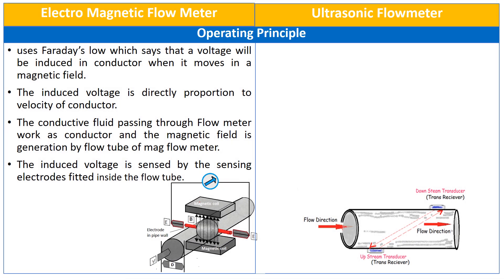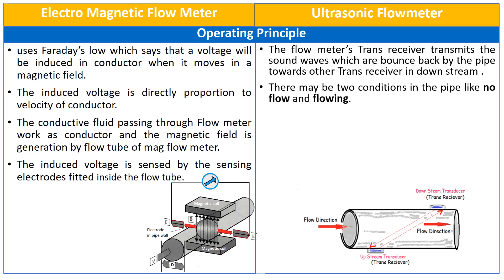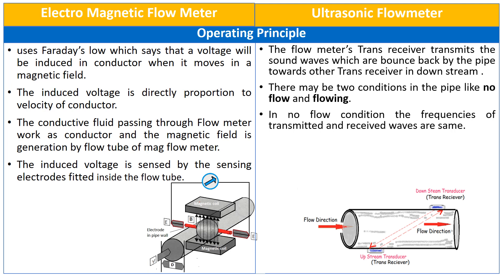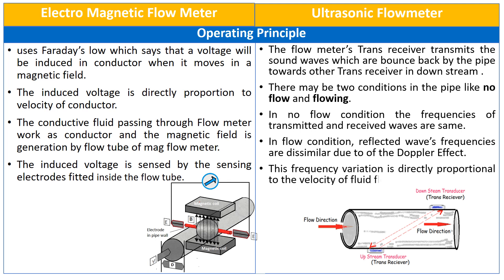In ultrasonic flow meters, the flow meter's transreceiver transmits sound waves which are bounced back by the pipe towards the other transreceiver in the downstream. There may be two conditions in the pipe: no flow and flow condition. In no flow condition, the frequencies of transmitted and received waves are the same. In flow condition, the reflected wave's frequencies are dissimilar due to the Doppler effect. This frequency variation is directly proportional to the velocity of fluid flowing into the pipe.